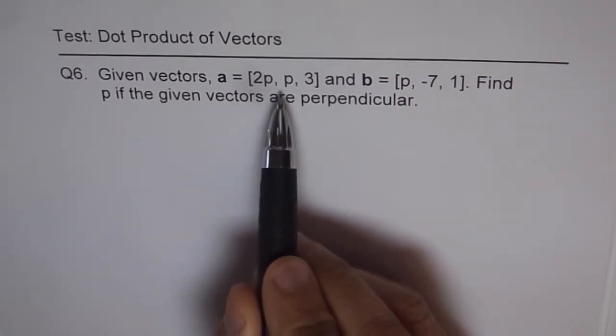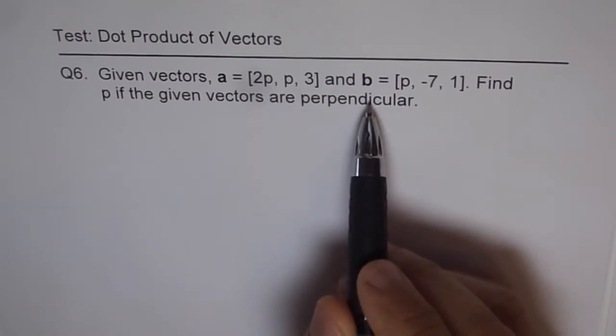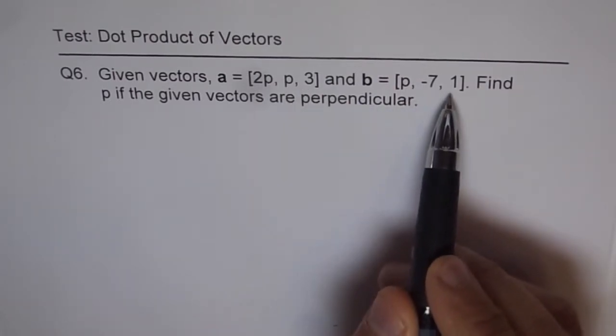Vector A is 2P, P, 3 and vector B is P minus 7 and 1.